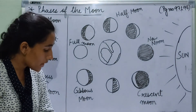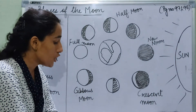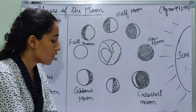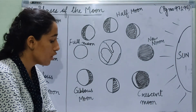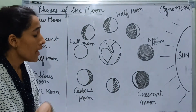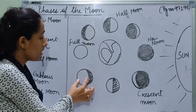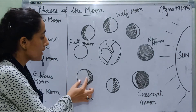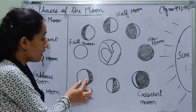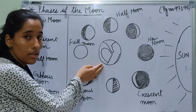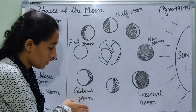Now let's go to page number 98. Gibbous moon: when a large portion of the illuminated side of the moon is facing towards the earth, we can see a large portion of the moon from the earth. So when this large portion of the illuminated side is facing towards the earth, it can be seen from the earth — and it is known as the gibbous moon.